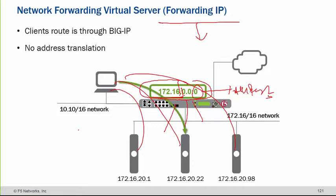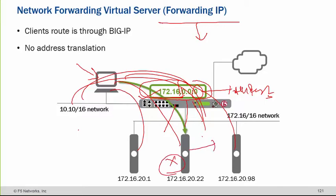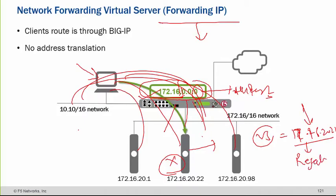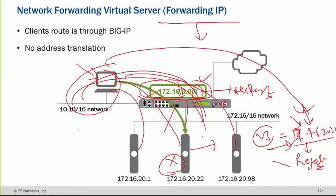If you want to block something — if you created that forwarding virtual server, it means it will allow anything. Now if we want that this IP or network cannot access a specific one, we have to create one extra virtual server which says virtual server is 172.16.20.22, and we can make this type as a reject. So now we have two virtual servers. If any client makes a request to that IP, F5 will see that this is my virtual server, I have to reject that. So it will deny and not send the packet.